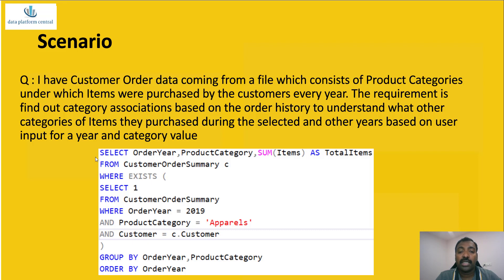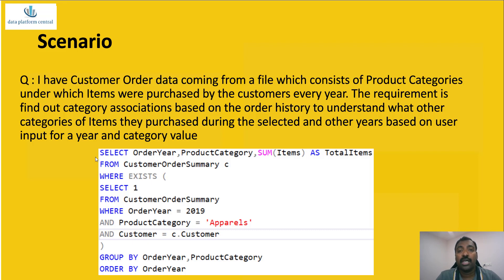What the query does is get data from customer order summary, summarize it by order year and product category, and get the total items. The main factor is finding all users who bought Apparel in 2019. For that purpose we use a correlated subquery: inside the subquery we find all customers who bought Apparel in 2019, then correlate by name with the outer query to get all their records, finding what categories they bought and how many items per year.